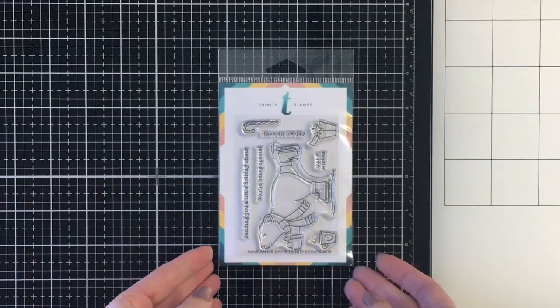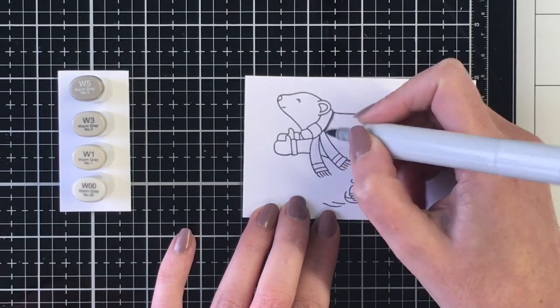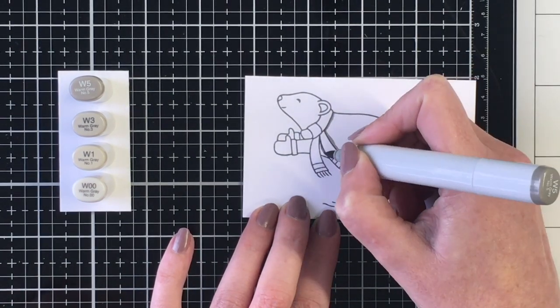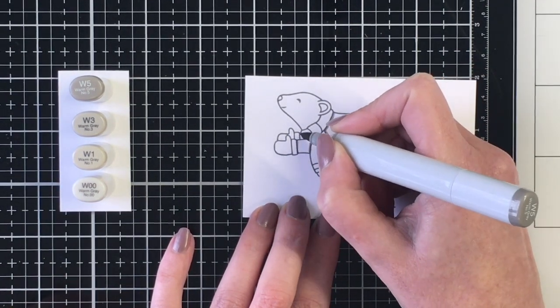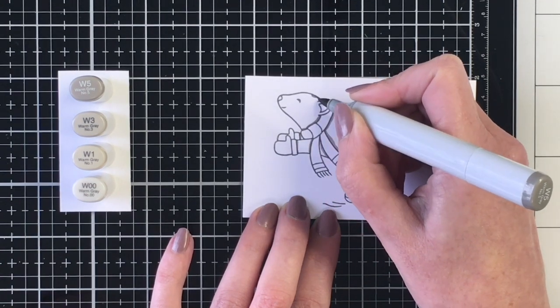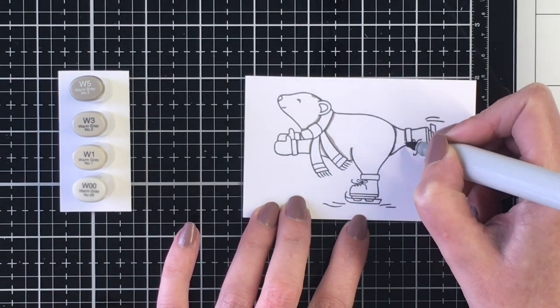It has this adorable little polar bear ice skating and some other elements such as a candy cane, a present, and a cup of coffee, and a few sentiments. And I just love this little guy.